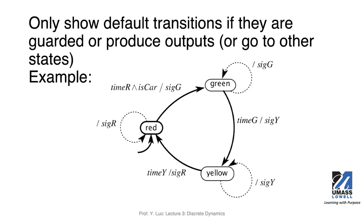We will show the default transition if it is guarded, or if it produces outputs, or goes to another state. For example, if this condition is not true, we stay in the red state but output signal R. Similarly, if the condition time-g is not true, we stay in the green state but output signal G. So in those cases, we show the default transition.